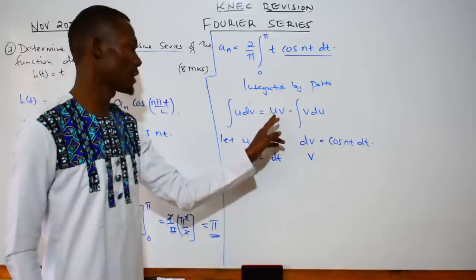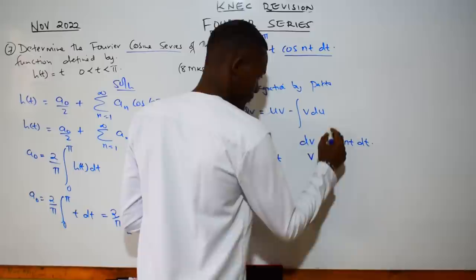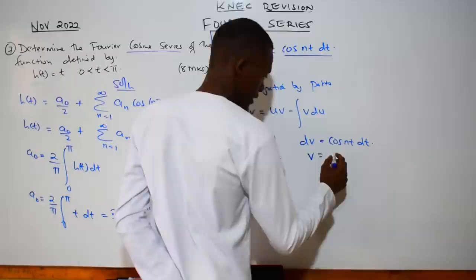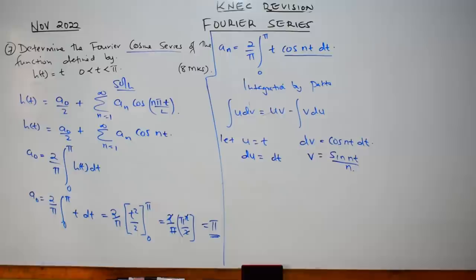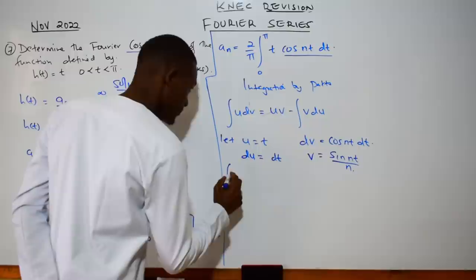Replacing everything into the formula, with the constant 2 over π in front: aₙ = (2/π) [t·sin(nt)/n from 0 to π, minus the integral of sin(nt)/n·dt]. Integrating sin gives negative cos, but with the negative sign already there it becomes positive. So we get (2/π)[t·sin(nt)/n + cos(nt)/n²] evaluated from 0 to π.